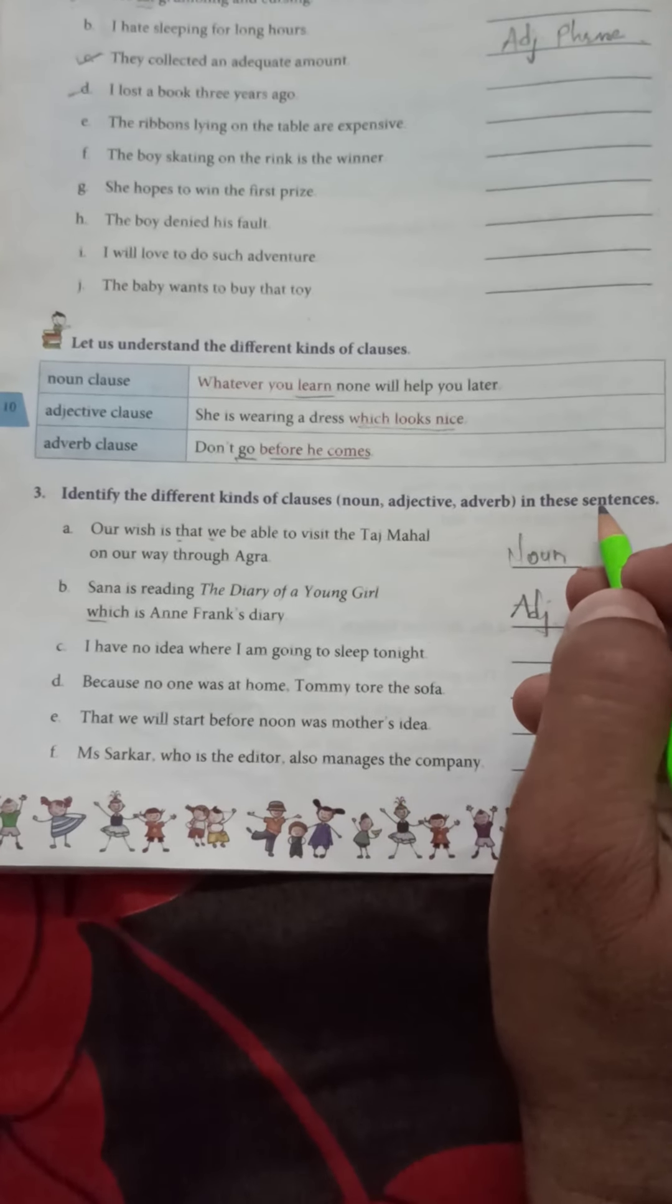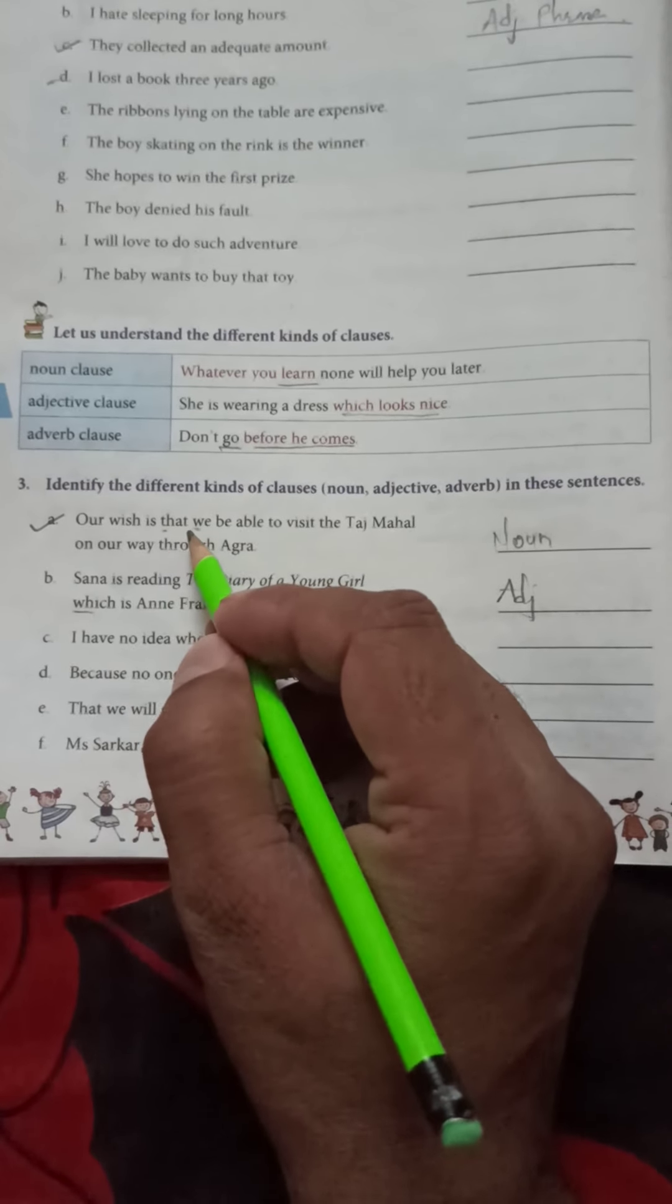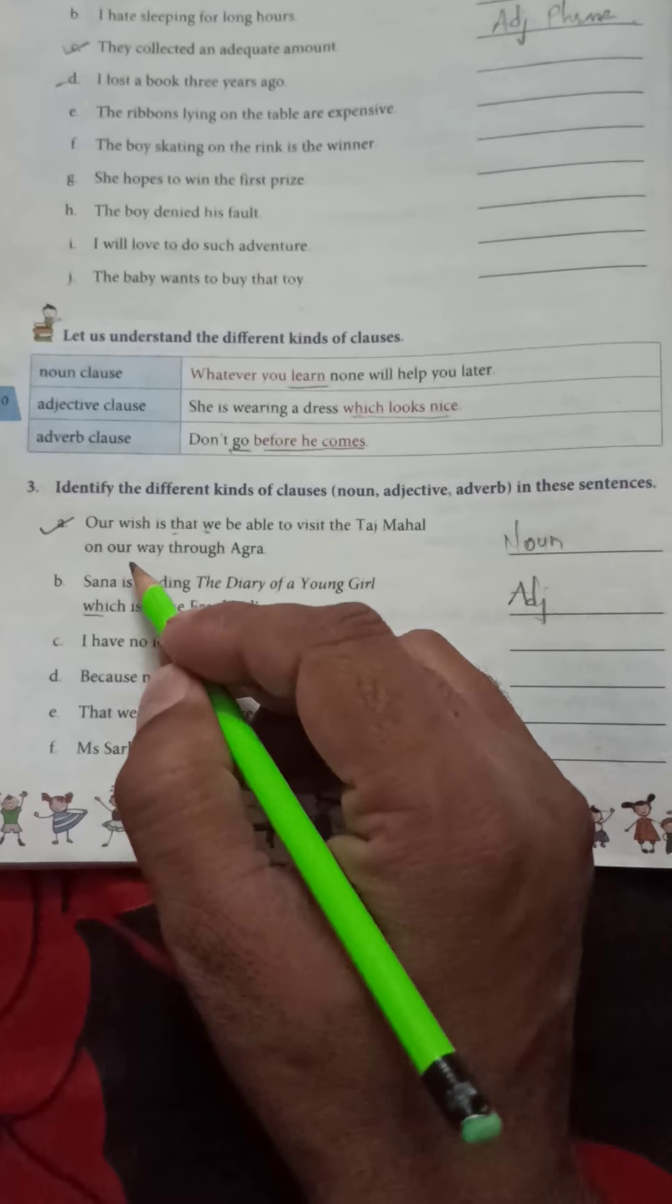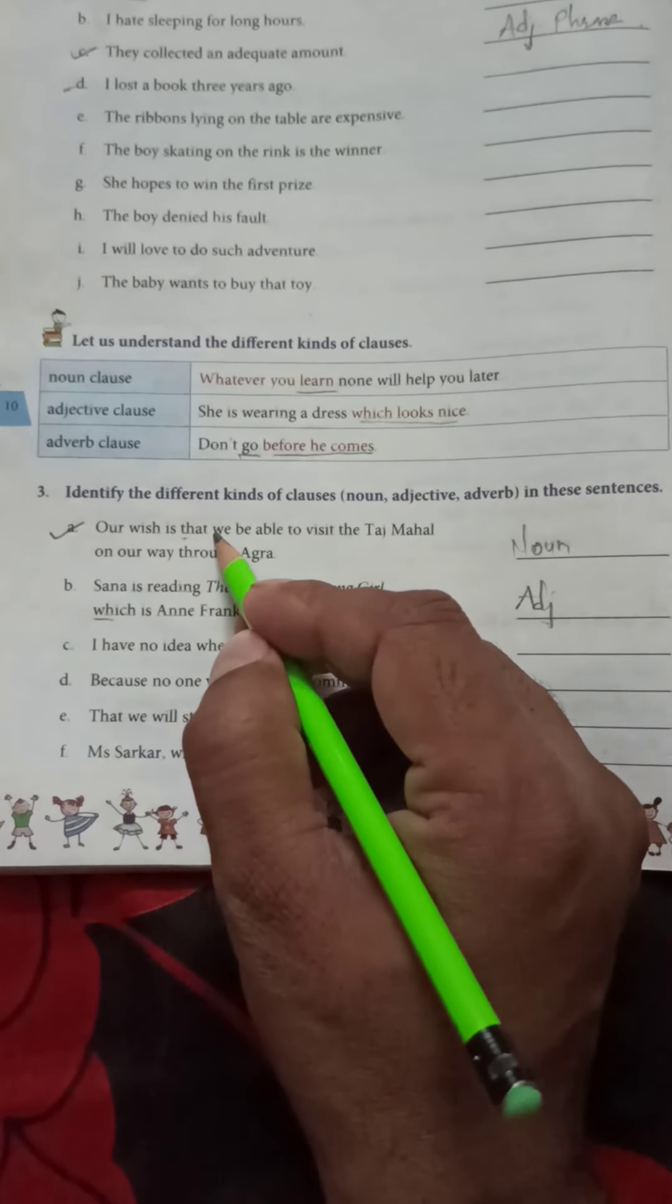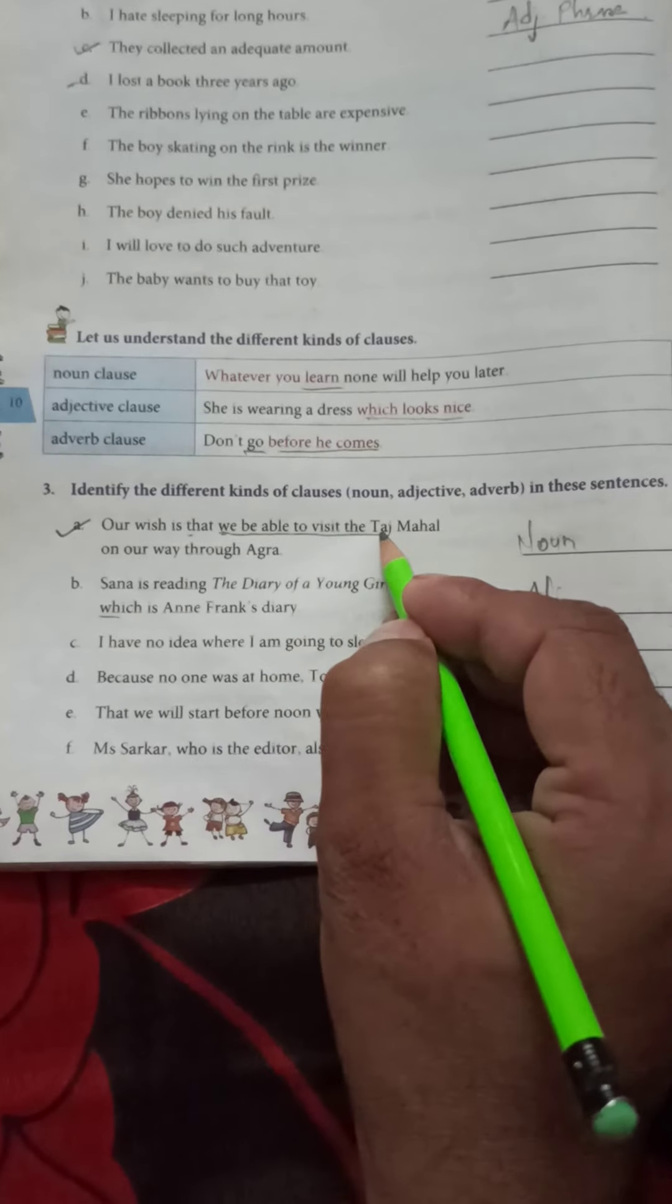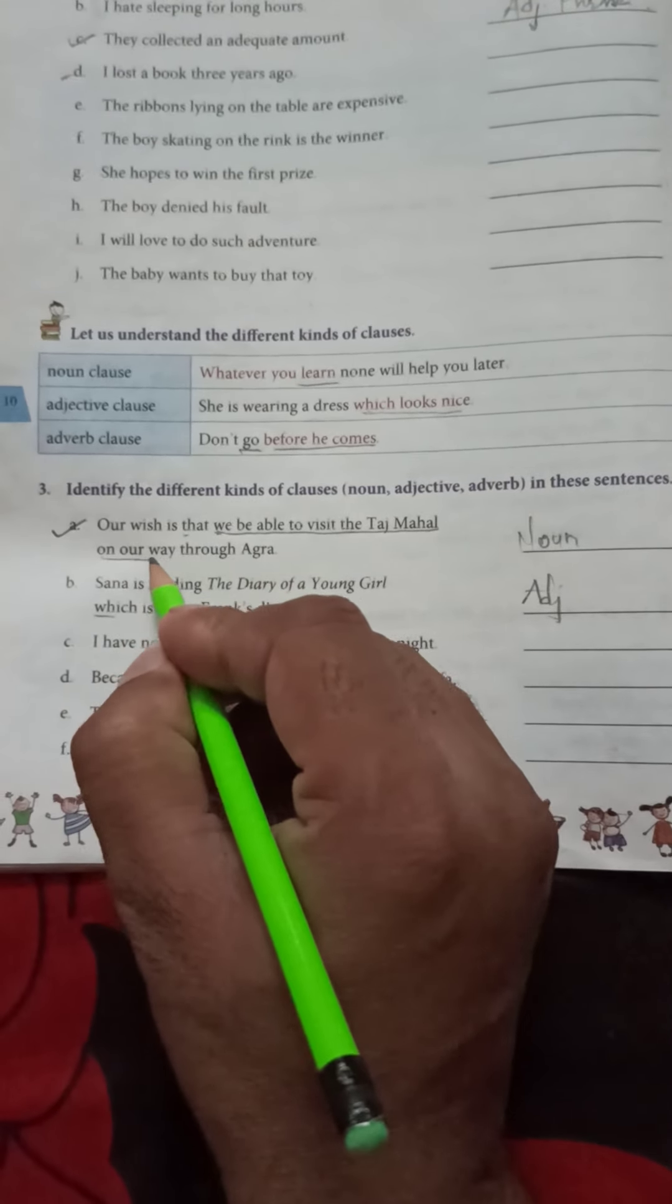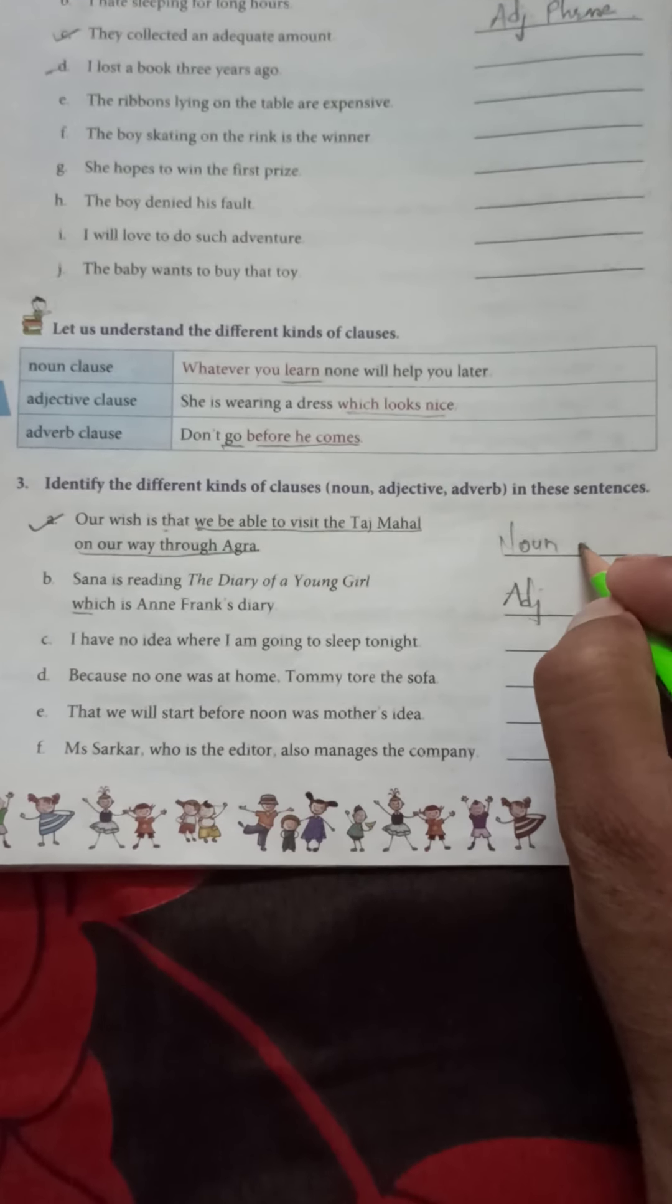First one is: our wish is that we be able to visit the Taj Mahal on our way through Agra. Here 'we be able to visit the Taj Mahal on our way through Agra' - this is noun clause.